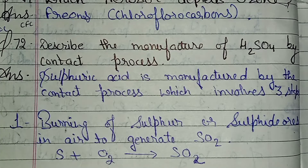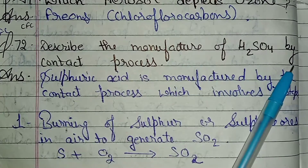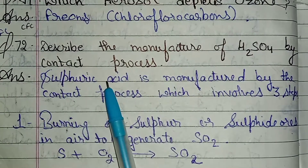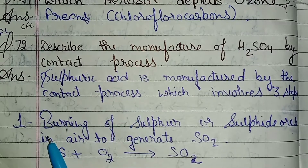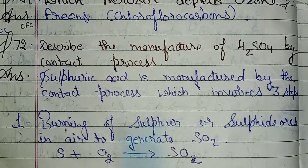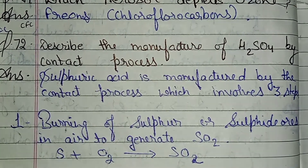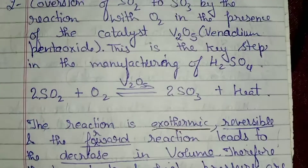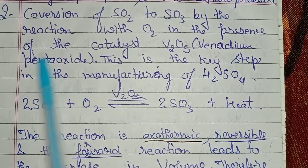Hello everyone, we are studying the p-block elements chapter of class 12th chemistry. Question number 72: describe the manufacture of H₂SO₄ by contact process. The first of three steps is the burning of sulfur or sulfide ore in air to generate SO₂: S + O₂ → SO₂.